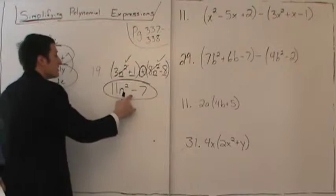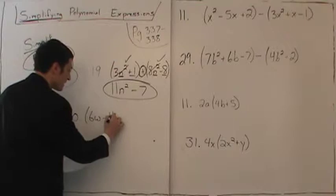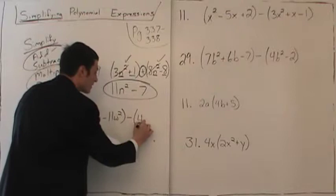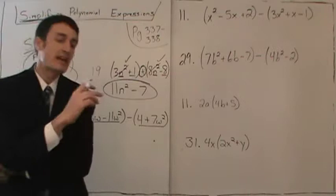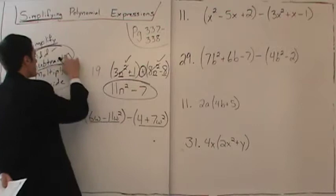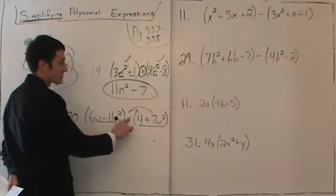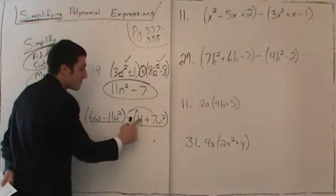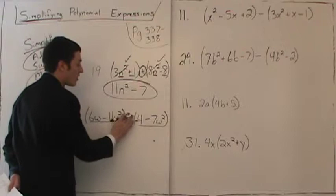Number 20 says: quantity 6w minus 11w squared, subtract quantity 4 plus 7w squared. We have a binomial subtract a binomial. We don't like to subtract — we like to add. So we're going to change the subtraction to addition by distributing the negative. Change all the signs of the terms that follow the subtraction: make positive 4 negative, make positive 7w squared negative, and change the subtraction to addition. This makes it easier and less error prone.